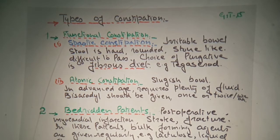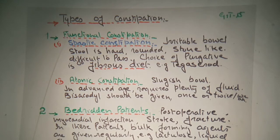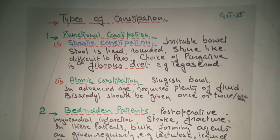Atonic constipation — when there is a decrease in the movement of the intestinal muscles, that is sluggish bowel. It is known as sluggish bowel. In advanced age, plenty of fluid is required — fluid is required for the softness of the stool. A suitable diet should be given once or twice.